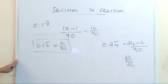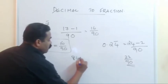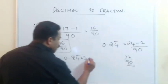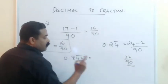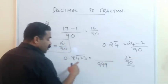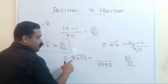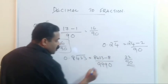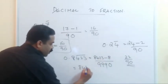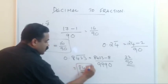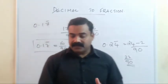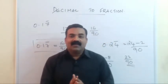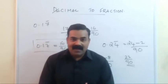One more example: 0.8423 bar — bar is on 4, 2, and 3, so three digits repeating. Three nines in denominator: 999. One digit without bar, so one 0 — denominator is 9990. Numerator: full number 8423 minus non-repeating digit 8 = 8415. So the answer is 8415/9990. This is the fraction equivalent. Practice this method — it is a very important topic for competitive exams. Prepare well, take care, bye bye.